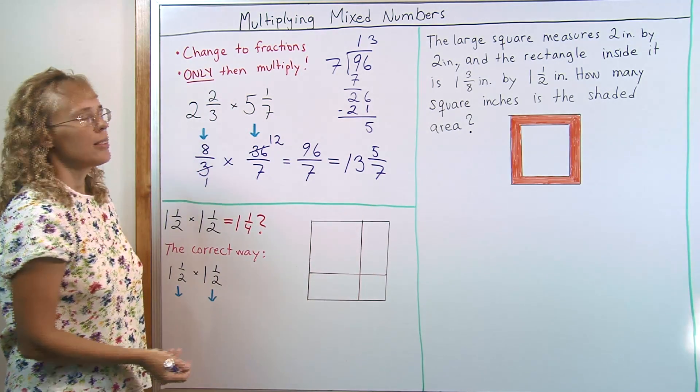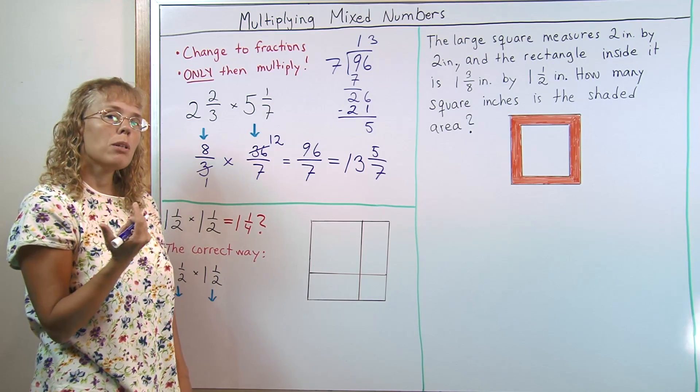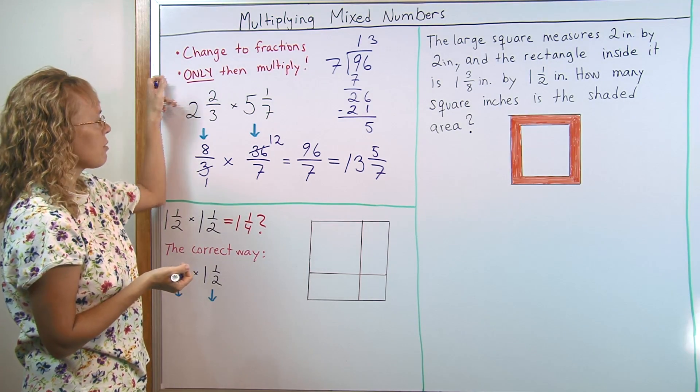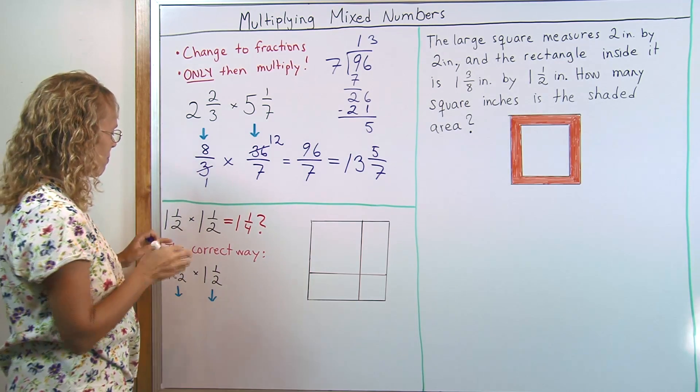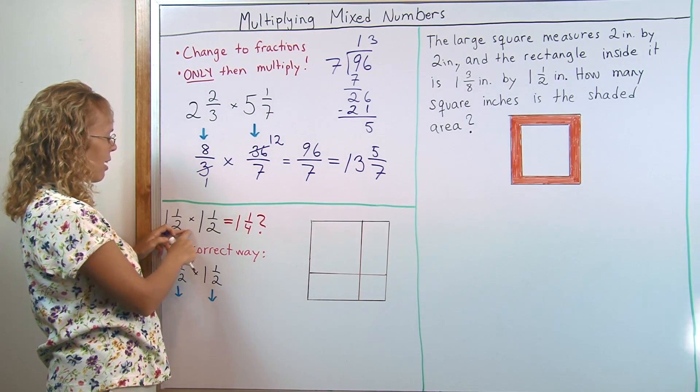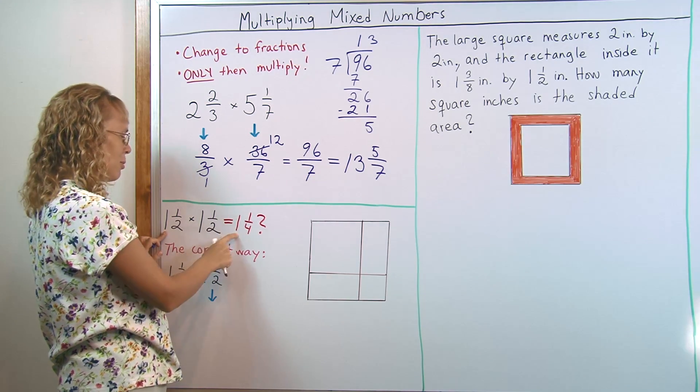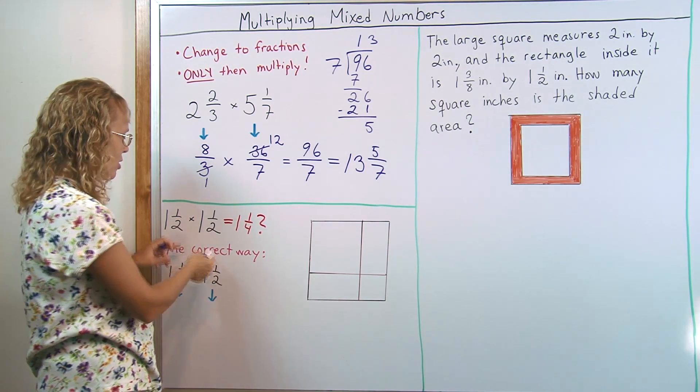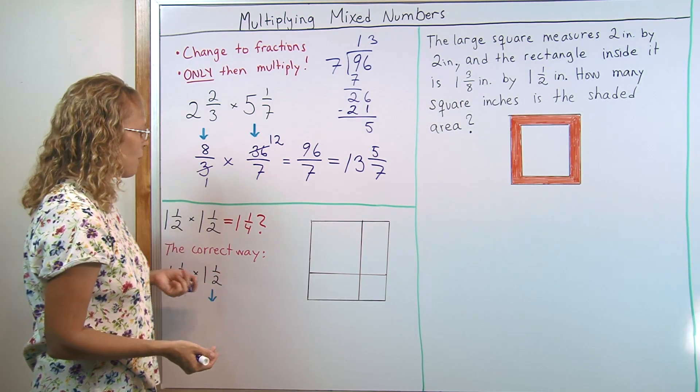Like I said, multiplying mixed numbers is very easy. The difficulty is in remembering that you have to change them to fractions first. And so students sometimes make a mistake that they go like this: 1 and 1/2 times 1 and 1/2. They multiply the whole number parts, 1 times 1. Then they multiply the fractions, 1/2 times 1/2 equals 1/4, and give the answer like that.